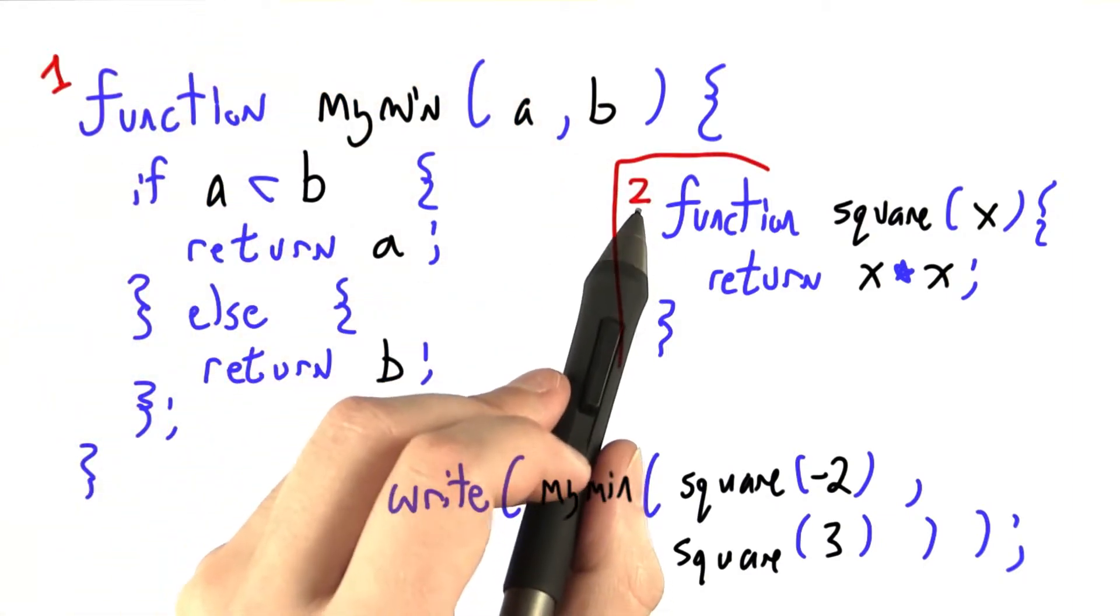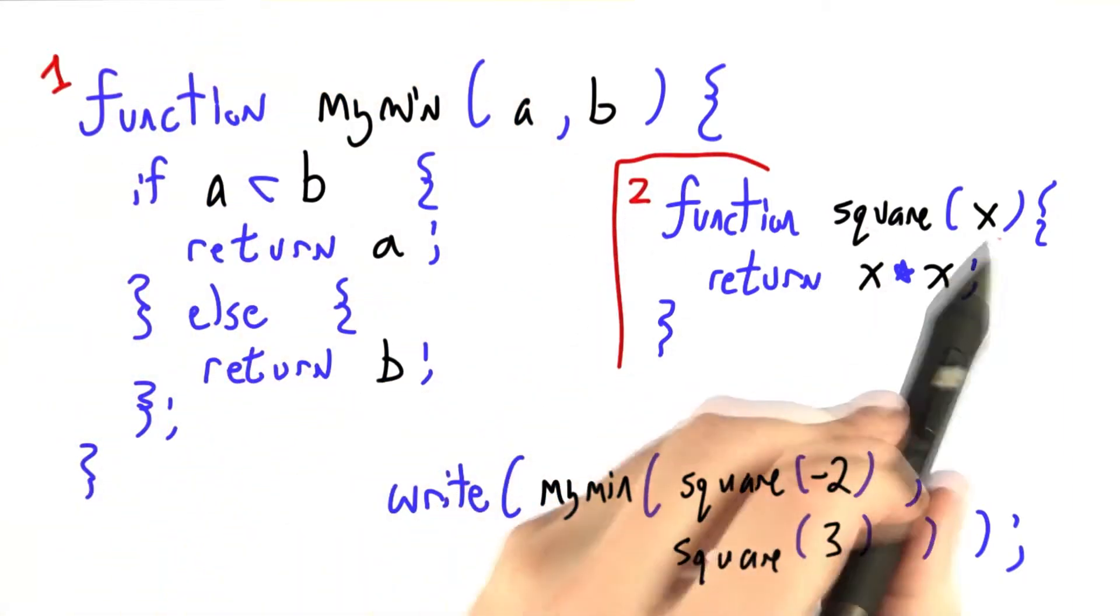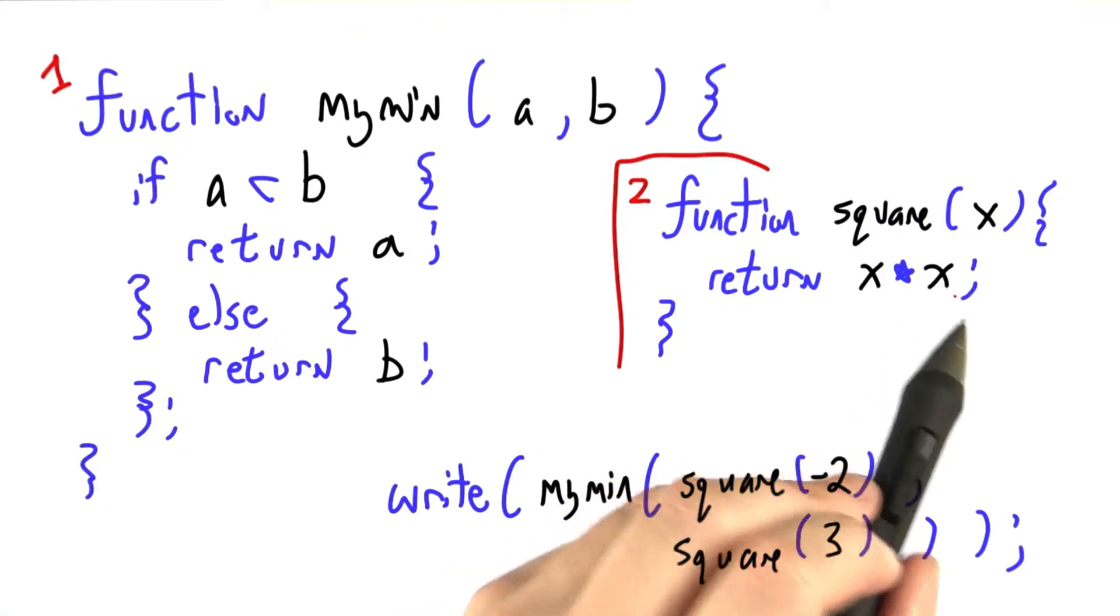Over here, another function definition for a function called square. It takes in a variable x and returns x times x.